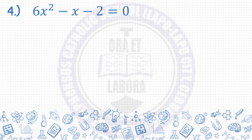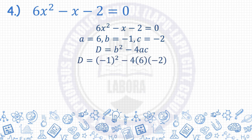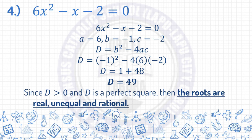Number 4: 6x squared minus x minus 2 equals 0. The given equation is already in the general form, so all we need to do is determine the values of a, b, and c: a is 6, b is negative 1, c is negative 2. Write the formula for the discriminant, then substitute the values. Negative 1 squared is 1, and negative 4 times 6 times negative 2 is positive 48. So 1 plus 48 is 49. Since the value of the discriminant is greater than zero and it is a perfect square, the roots are real, unequal, and rational.